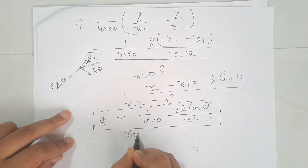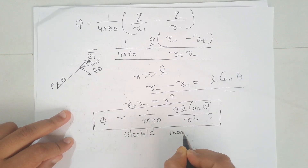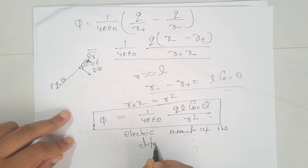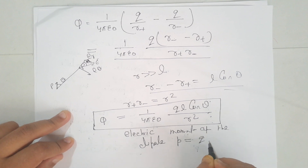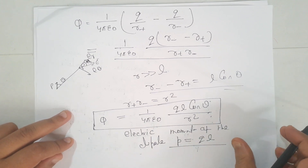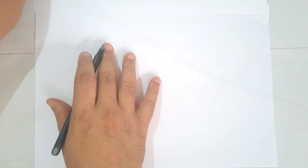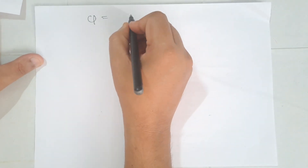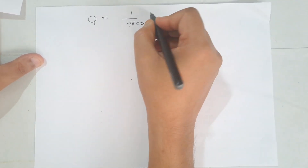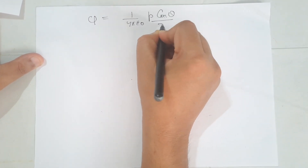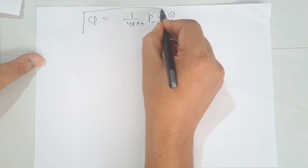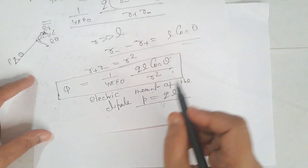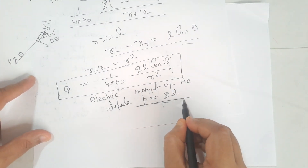We know that the electric moment of the dipole is P equals Q times L. Therefore the potential simplifies to: phi equals 1 over 4 pi epsilon-naught times P cos theta divided by R-squared. This is the potential of the dipole field at point P, where the electric moment is P equals Q times L.